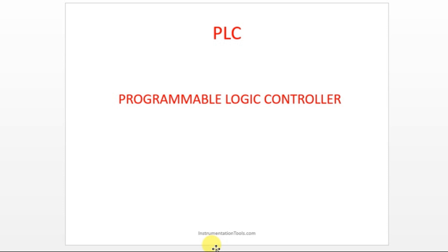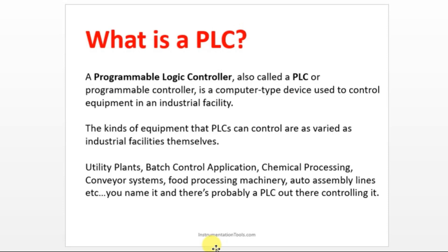PLC plays a vital role in control systems and industrial automation. It's a dedicated industrial computer — a computer-type device used to control equipment in an industrial facility. You can find PLCs in utility plants, batch control applications, chemical processing, conveyor systems, food processing machinery, and auto assembly lines.